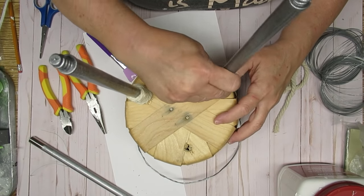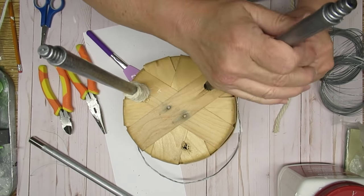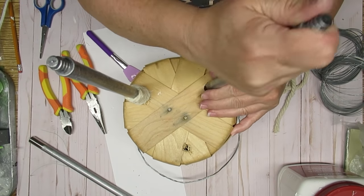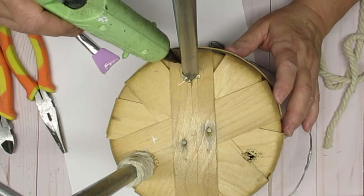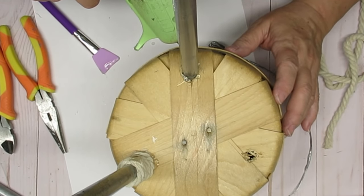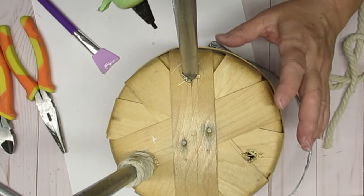To assemble the legs, I took these posts and I pushed them through the holes that I had made with my drill earlier. Then I added some hot glue all the way around just to hold it secure while I was working on it.